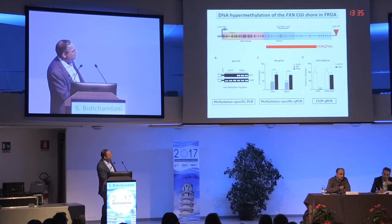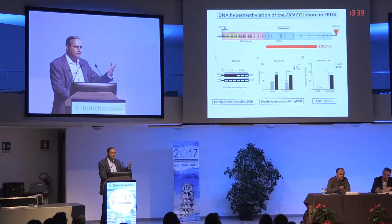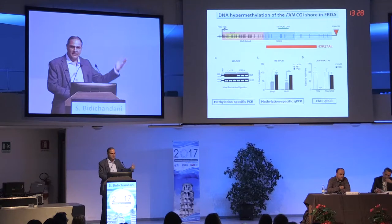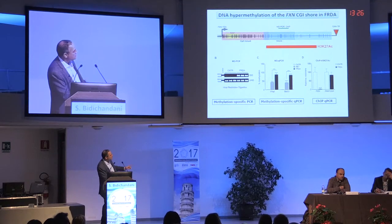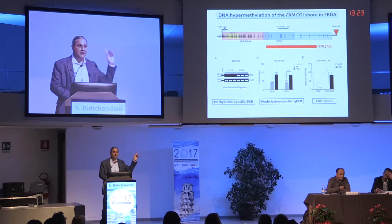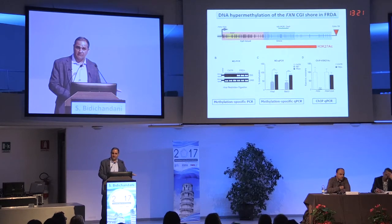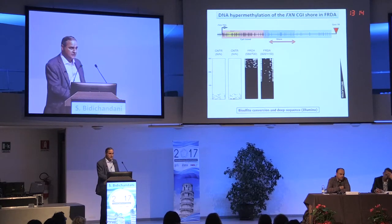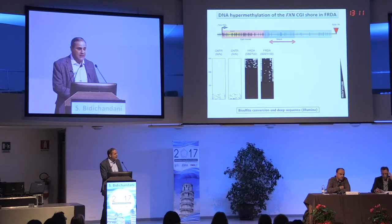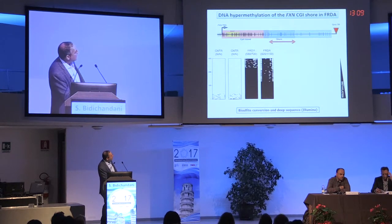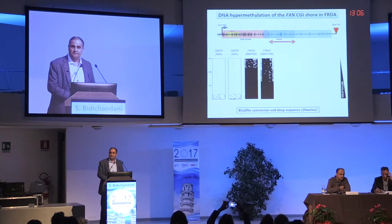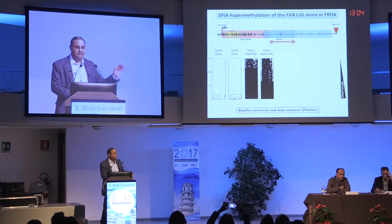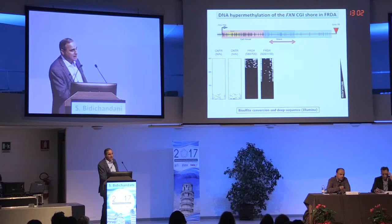And of course you also see hypoacetylation — Joel has tried every antibody available in this region and shown this, and many others have also shown hypoacetylation. Now here's deep sequencing of the shore region. People without the GAA expansion show no methylation, and people with expansions show a day-and-night difference in the methylation pattern within the shore. I'm showing lymphoblastoid cells, but we've done it in peripheral blood, fibroblasts, and tissues from the humanized mouse model from Mark Pook's lab.